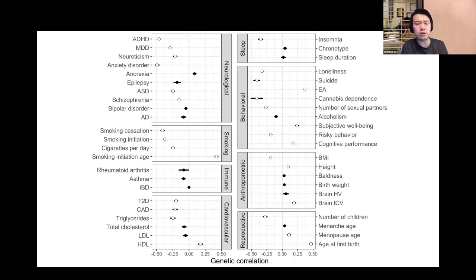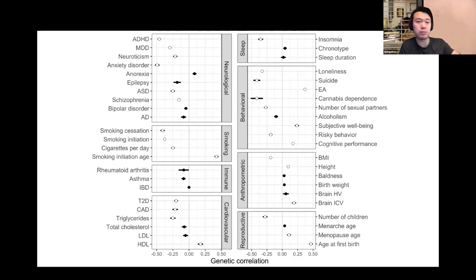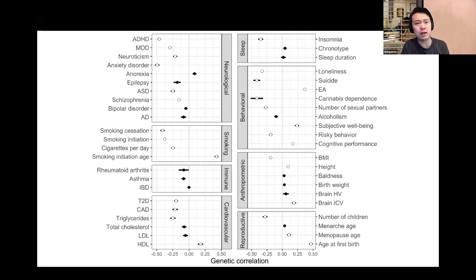An additional analysis of interest: for traits like EA, we have multiple sets of summary statistics — one based on UK Biobank and one based on samples without UK Biobank. Examining the genetic correlation between UKB-based GWAS and non-UKB-based GWAS could reveal how much participation bias in the UKB affects the associations. We might expect reduced genetic correlation when testing against non-UKB-based GWAS, and Ethan is putting together a list of all non-UKB GWAS to enable that analysis.